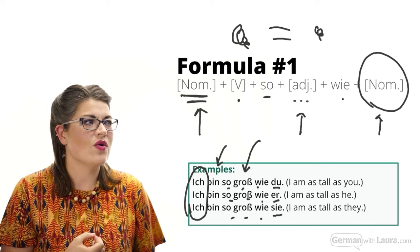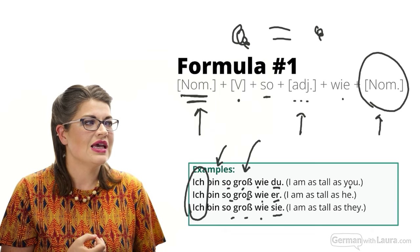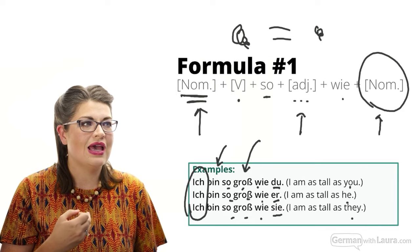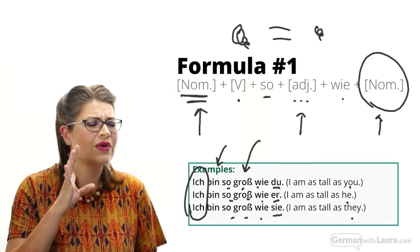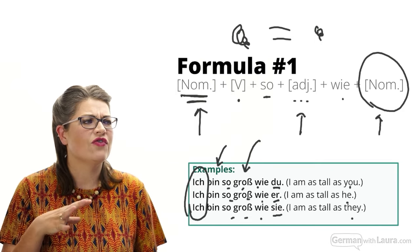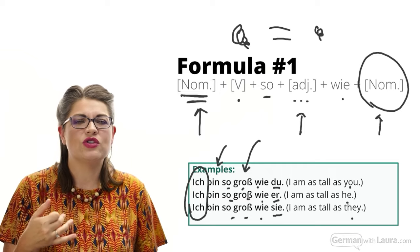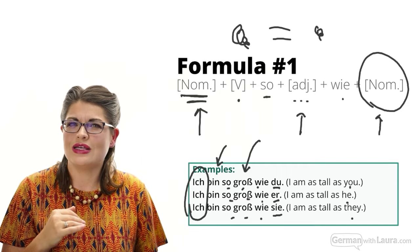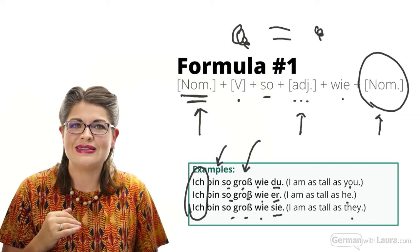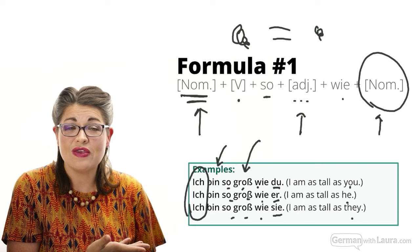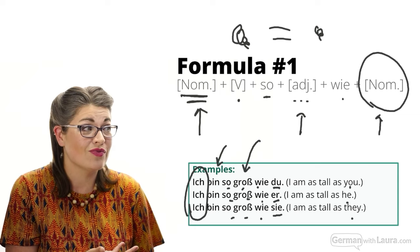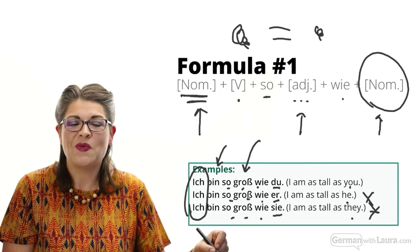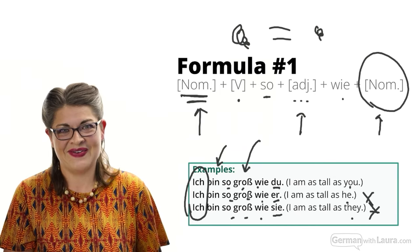You can see this in the pronouns used: 'du,' 'er,' 'sie' — which translate to 'you,' 'he,' and 'they' in the nominative. In English you might say 'I am as tall as he' and think that sounds like a typo, but it is in fact grammatically correct. More on that in a moment — first let's look at the second formula.